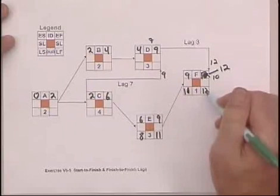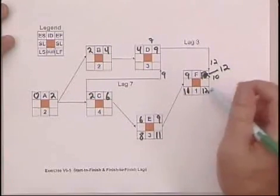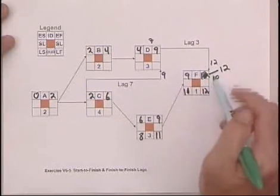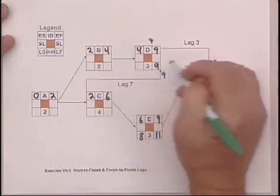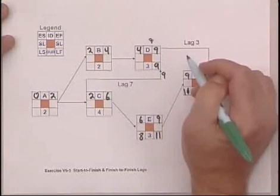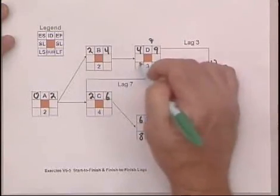One minus twelve is eleven. And eleven down here is eight. And then here we've got to take that twelve, but now we subtract three from the twelve, which makes it nine again. Three minus nine is six.